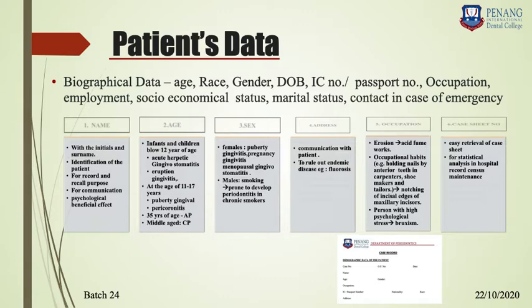Age is important because some periodontal and gingival diseases are prevalent in certain age groups. For example, in infants and children, herpetic diseases and gingival stomatitis or eruption gingivitis are more frequently seen. At the age of 11 to 17 years in female patients, you can see puberty gingivitis. Between ages 17 to 27, the third molar may be erupting, which can result in pericoronitis.